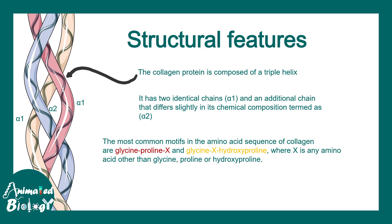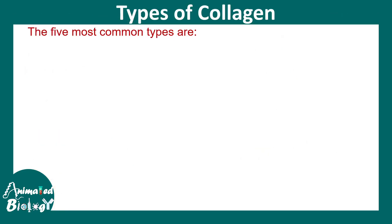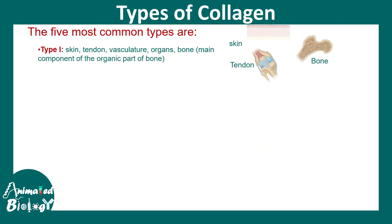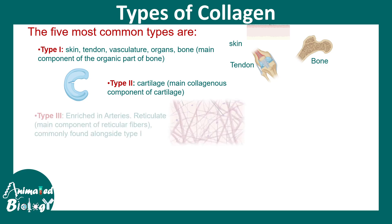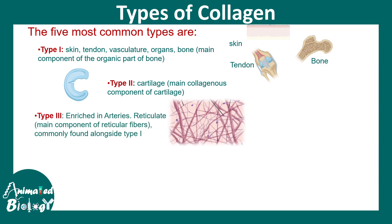The five most common types of collagen are: type 1, which is abundant in skin, tendon, vasculature, etc.; and type 2 collagen, which is highly enriched in cartilage — these constitute the collagenous component of the cartilage.